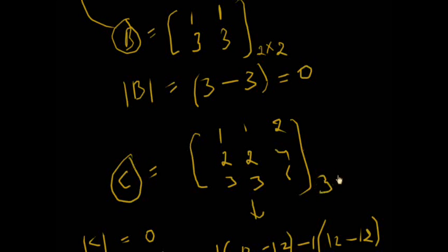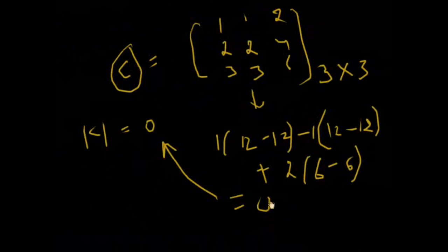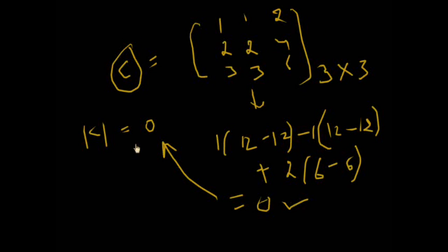C is a singular matrix because it is a square matrix and its determinant is zero. Thank you very much.